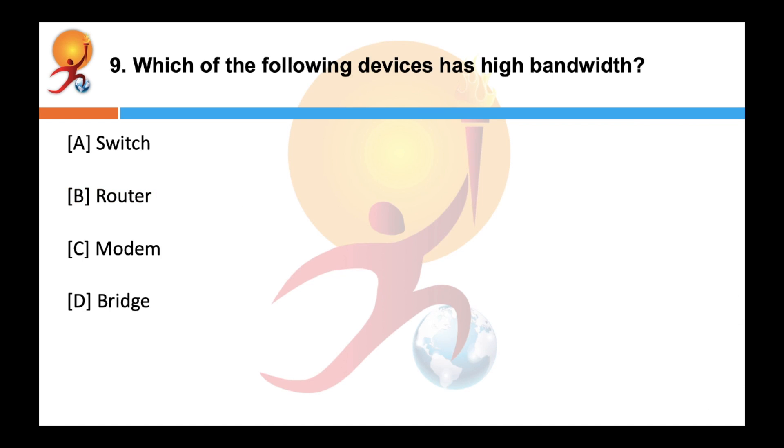Which of the following devices has high bandwidth? Correct answer is a switch. A network switch is a computer networking device that connects devices on a computer network by using a packet switching to receive, process and forward data to the destination device.